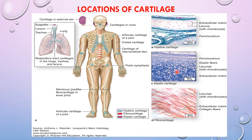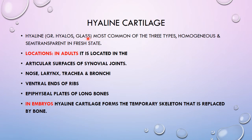The word 'hyaline' comes from a Greek word meaning glass-like. It is the most common of the three types, homogeneous and semi-transparent in the fresh state. In adults, hyaline cartilage is located at the articular surfaces of synovial joints, the nose, larynx, trachea, bronchi, and ventral ends of the ribs, as well as the epiphyseal plates of long bones. In embryos, hyaline cartilage forms the temporary skeleton that is later replaced by bone.